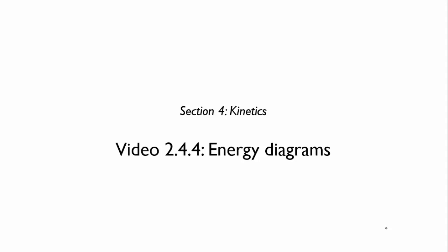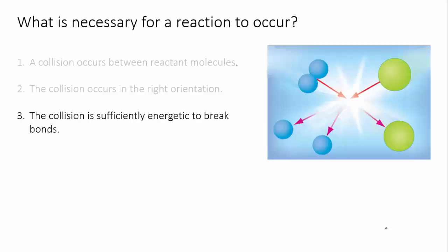To do this, we need to revisit the energy diagrams that you learned about in Unit 1. So we know that for a reaction to occur, the reactant molecules have to collide in the right orientation and with sufficient energy to break bonds. Let's explore the idea of sufficient energy more closely.